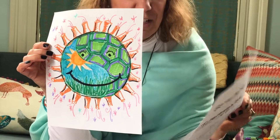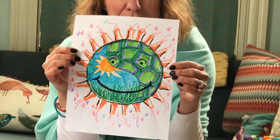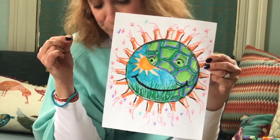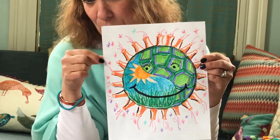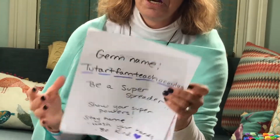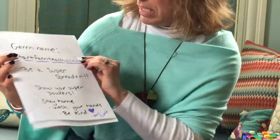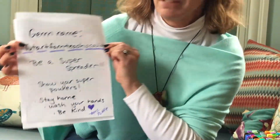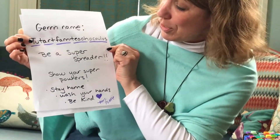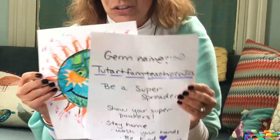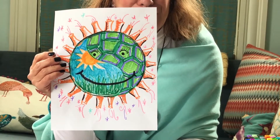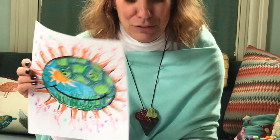I want you to give it a name. You might combine the different pictures — think about what is in it. Mine is called Tut Art Teach Oculus. Fam is in there as well. So I want you guys to create a beautiful germ using all of those different things.